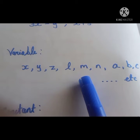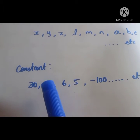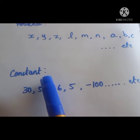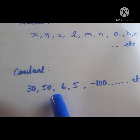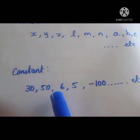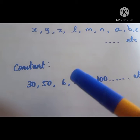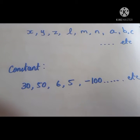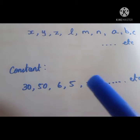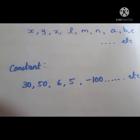Constant means a fixed value. It has a fixed value. For example, 30, 50, 6, 5, minus 100 — like that. It has a fixed value.